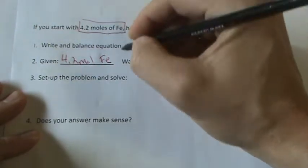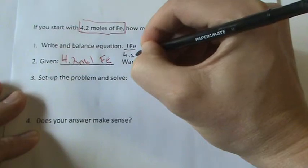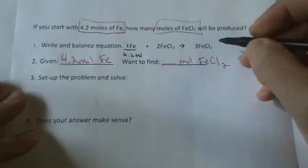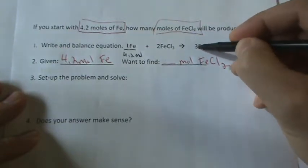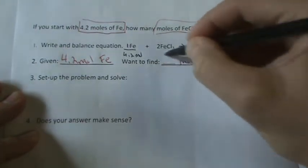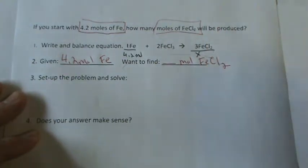And we can see that for every 1 mole of Fe, 1 mole of Fe is to 4.2 moles of Fe, as we're looking for FeCl2, so 3 is to, and that's what I want to find, I don't know, 3 is to x.